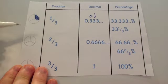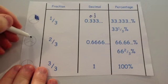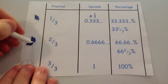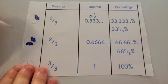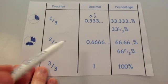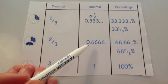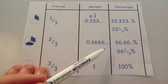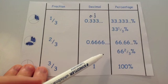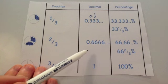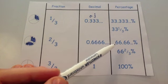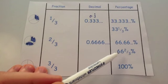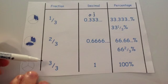Two thirds: if you're asked to shade in two thirds, you shade in two out of the three sections. If you do two divided by three you get 0.6 recurring — 0.6666... If you do that on a calculator it shows a 7 at the end because it rounds to fit the display, but technically it's 0.6 forever. As a percentage that's 66.666...% or 66 and two thirds percent.